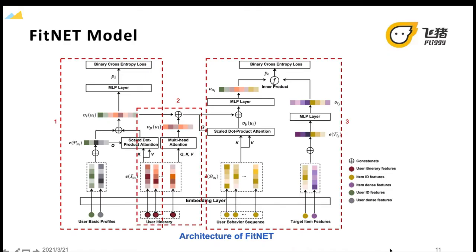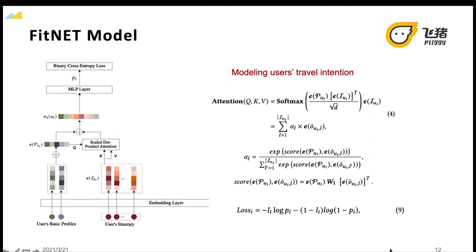This slide shows the architecture of FitNet, which includes three different attention modules. The first attention module is modeling user's travel intention.